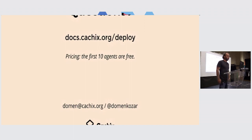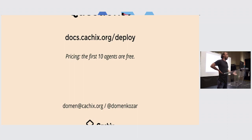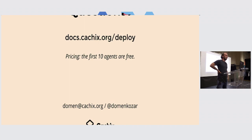The CachixDeploy client is of course open source and most development happens there. The server side is closed source, and the first 10 agents you run are free. It's currently in beta — if you want to help out, that would be great. I hope within a month we'll release the general availability of CachixDeploy. I hope you have some questions — thank you.